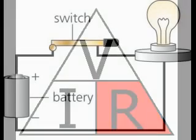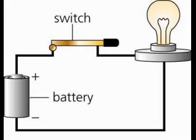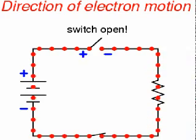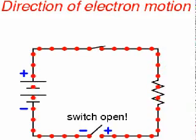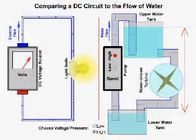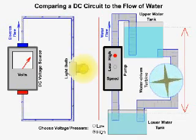An electrical circuit is formed when a conductive path is created to allow free electrons to move continuously. This continuous movement of free electrons through the conductors of a circuit is called a current and is often referred to in terms of flow, just like the flow of a liquid through a hollow pipe.